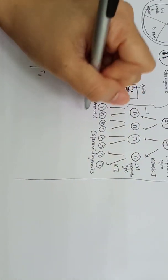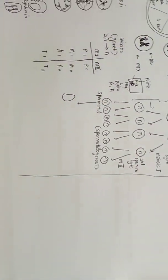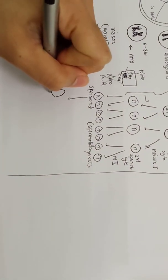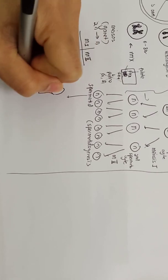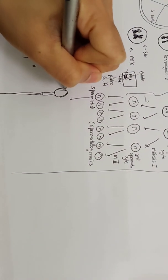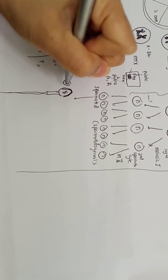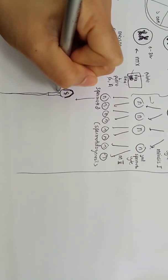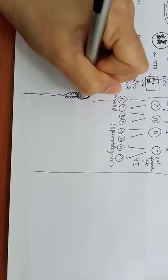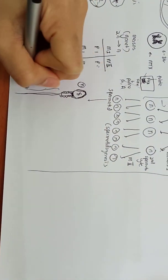After that, the spermatids will mature and become spermatozoa that will eventually fertilize the egg. The spermatozoon has an acrosomal cap, a nucleus with haploid genetic material, mitochondria, centrioles, a nuclear envelope at the base, and a tail.